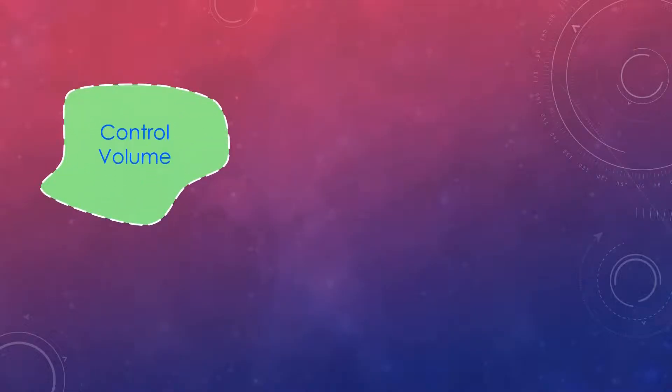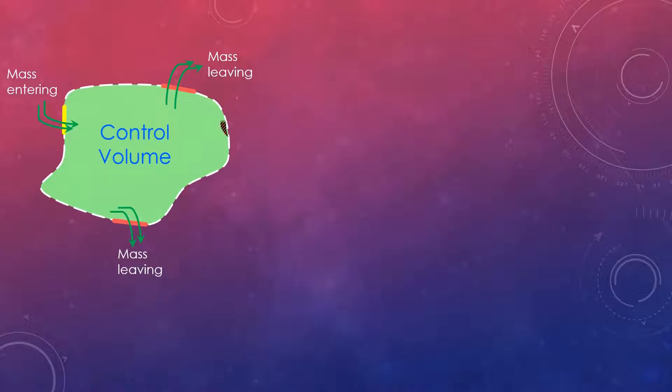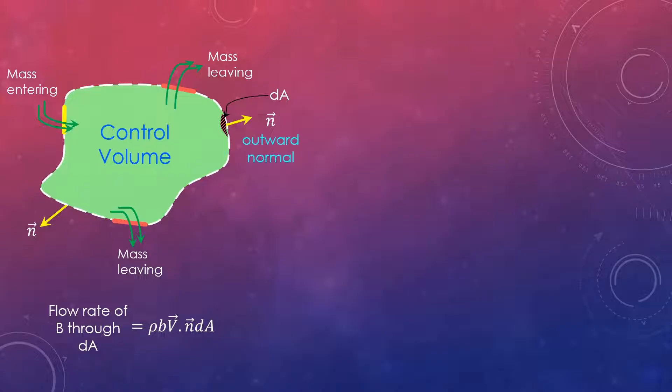Let's take a control volume of an arbitrary shape having one inlet port for mass entrance and two outlet ports for mass leaving. Now if we take a differential surface area dA on the control surface and denote its outer normal by n. The flow rate of property B through dA is given as rho*b*V dot n*dA since the dot product of V and n gives the normal component of the velocity. The integration of b through dA over the control surface gives the net amount of property B flowing out of the control volume per unit time.